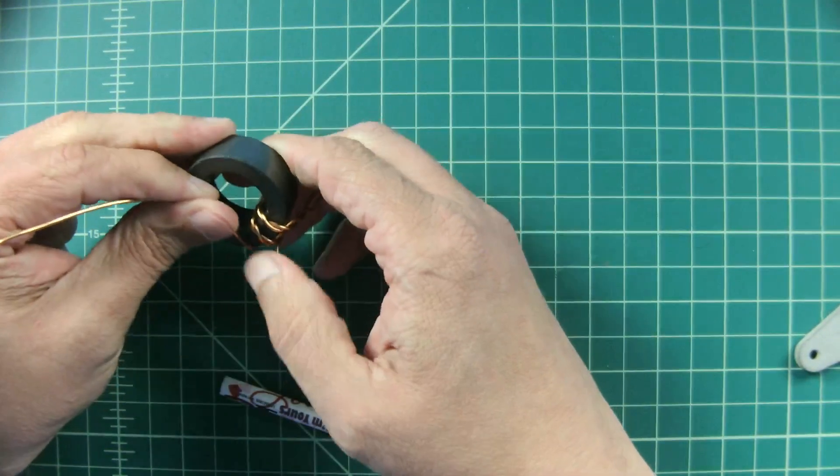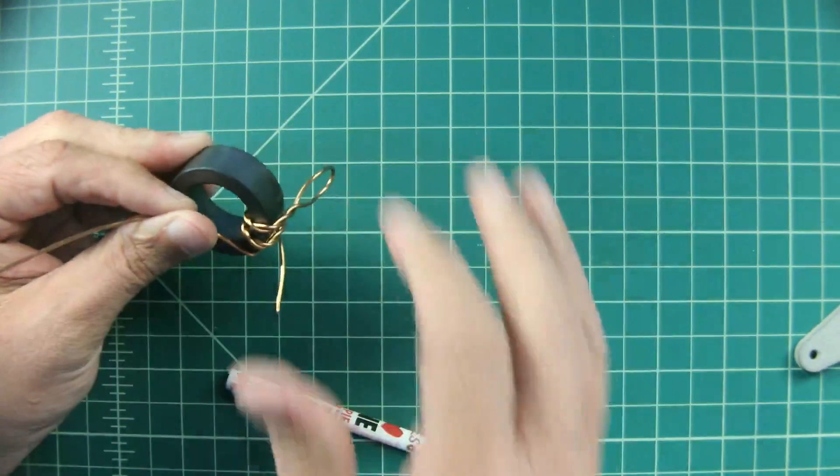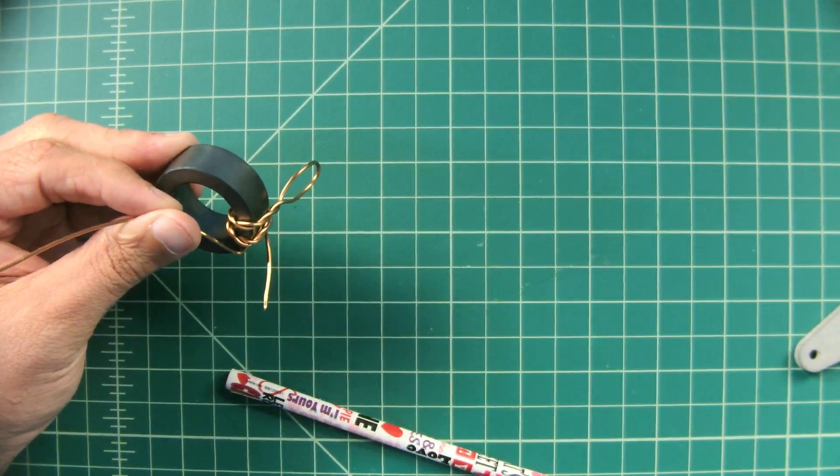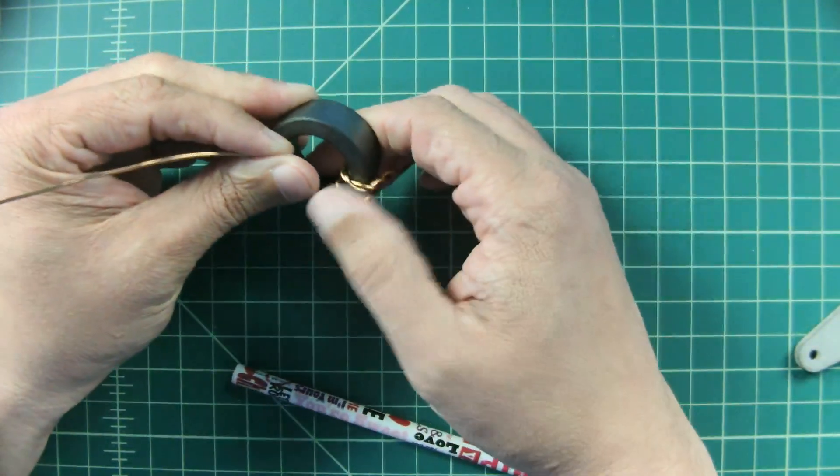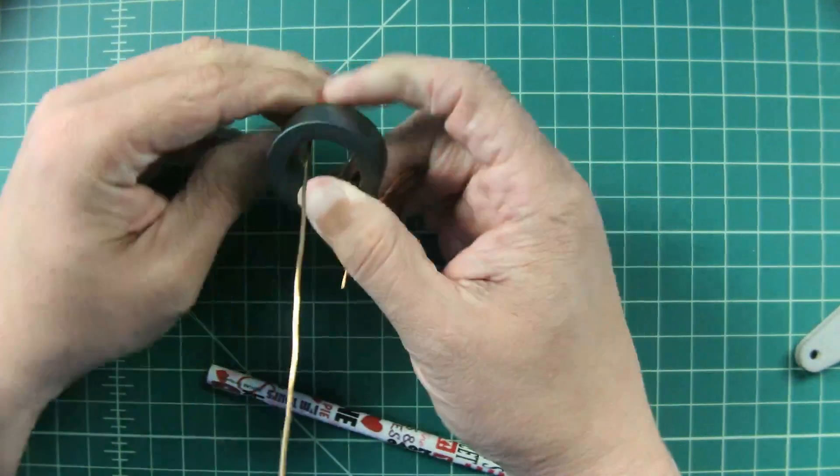When working with wire that is rigid like this, you want to be extremely careful. We are going to wrap seven windings and then we are going to cross on the eighth.